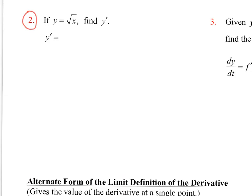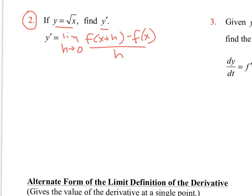Moving on to example 2: if y equals the square root of x, we want to find y prime, which is the derivative of y — similar to f prime of x. We start with the limit definition using h: the limit as h goes to 0 of f(x + h) minus f(x), all over h. Plugging in, we get the square root of (x + h) minus the square root of x, all over h. To simplify this, we use a technique called multiplying by the conjugate.